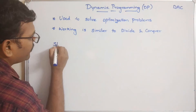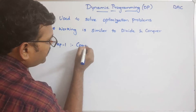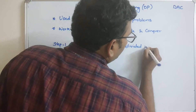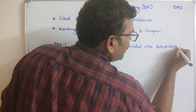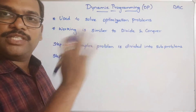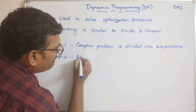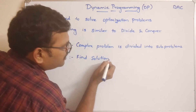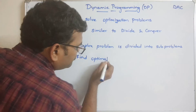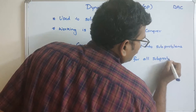Step one: the complex problem is divided into sub-problems — either a complex or a large problem. Step two: we find the optimal solutions for all sub-problems. These two steps are common with divide and conquer.